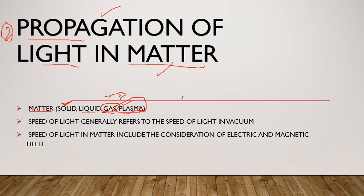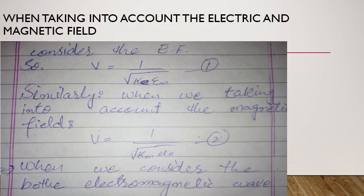Speed of light generally refers to the speed of light in vacuum — جب بھی ہم speed of light کہیں گے اس کا مطلب vacuum میں speed ہے۔ Speed of light in matter کا جو most important point ہے وہ یہ ہے کہ یہ consideration of both electric and magnetic field include کرتی ہے، کیونکہ light wave ایک electromagnetic wave ہے۔